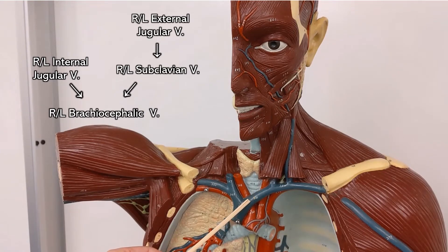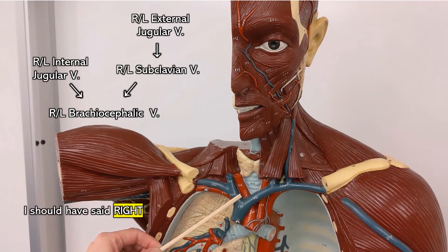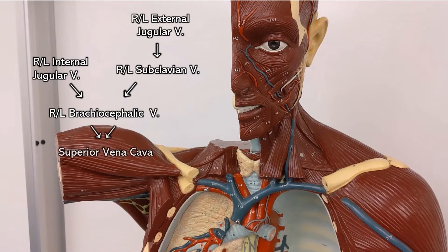So right brachiocephalic vein, left brachiocephalic vein, and when they come together they make the superior vena cava.